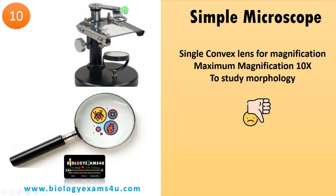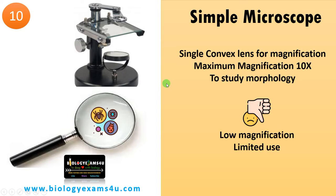Take the case of this dissection microscope — it can also be considered a simple microscope as it is made up of a single type of lens. Maximum magnification is 10x. It is used to study the morphology of animals and plants. The downside is it is of low magnification and limited use, but it is affordable, portable, and economical.